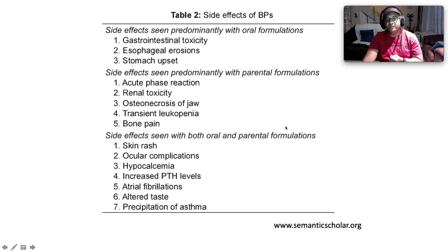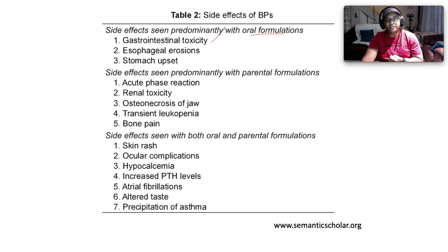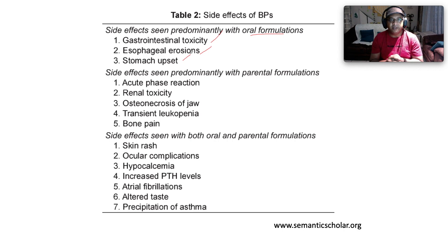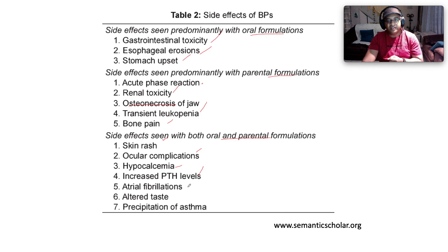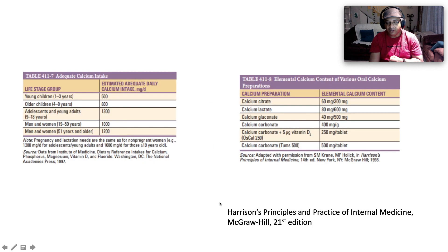Side effects of bisphosphonates are important to know, especially oral versus IV formulations. With oral formulations: GI toxicity, esophageal erosion, and stomach upset — patients must take it first thing in the morning, wait at least two hours before breakfast, and remain sitting upright for at least 30 minutes to two hours. Side effects with parenteral formulations include acute phase reaction, renal toxicity, and the dreaded osteonecrosis of the jaw, transient leukopenia, and bone pain. Side effects with both oral and parenteral formulations include skin rash, ocular complications, hypocalcemia, increased PTH levels, atrial fibrillation, altered taste, and precipitation of asthma.